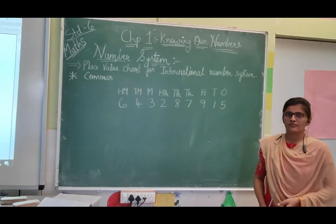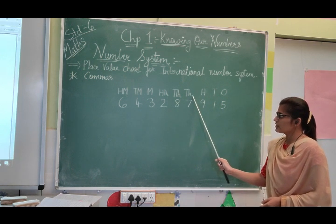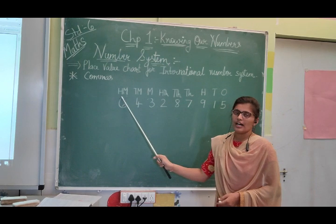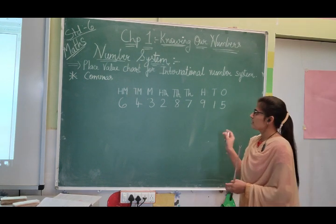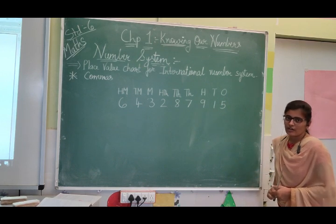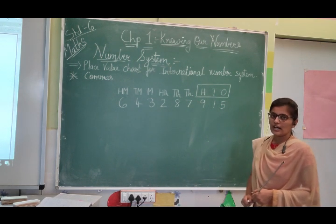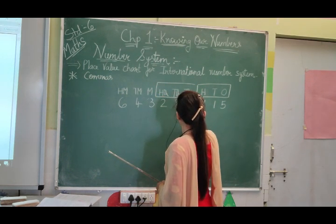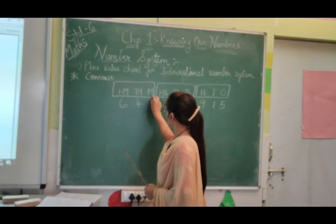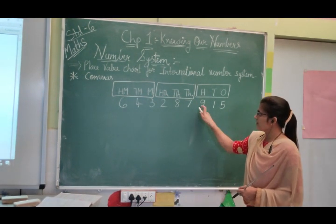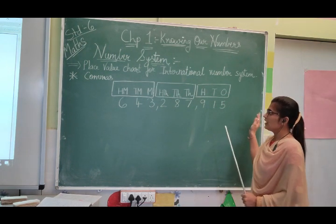Now we will move to the next topic — how to put commas between numbers. In the International number system, the place values are grouped as: 1s, 10s, 100s in one block; then 1,000s, 10,000s, 100,000s in another block; then 1 million, 10 million, 100 million in the third block. We start putting commas from the right-hand side — after every 3 digits. So between the 3rd and 4th digit from the right we place a comma, and again after the next 3 digits.